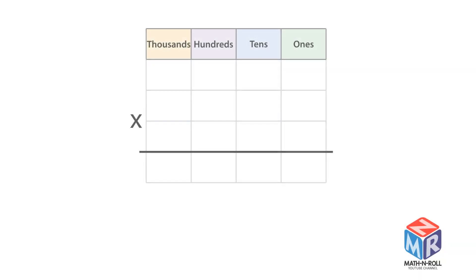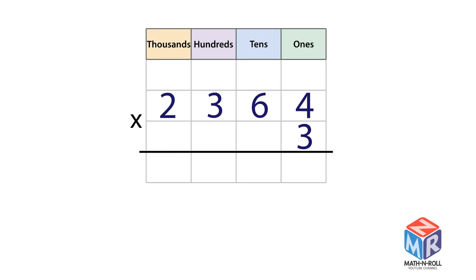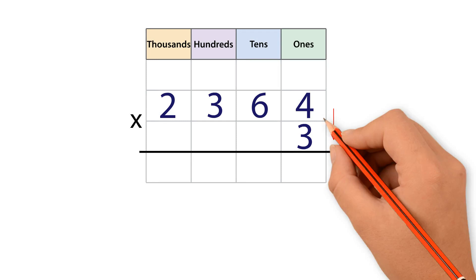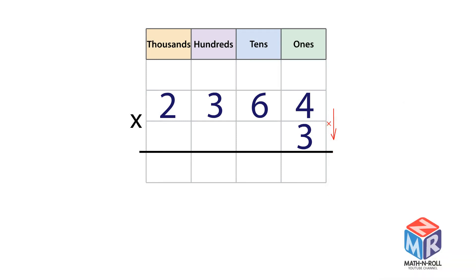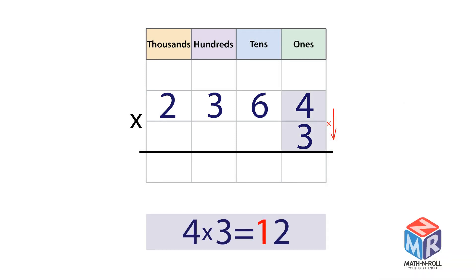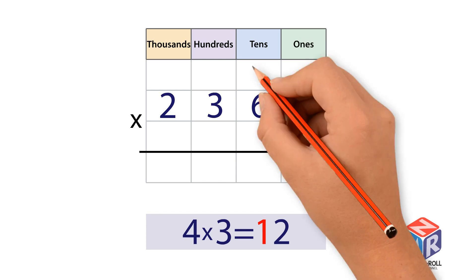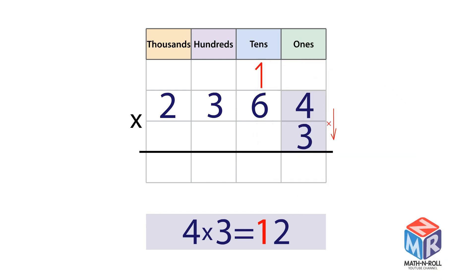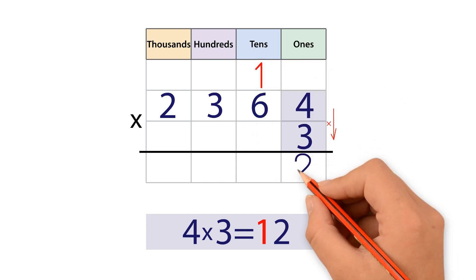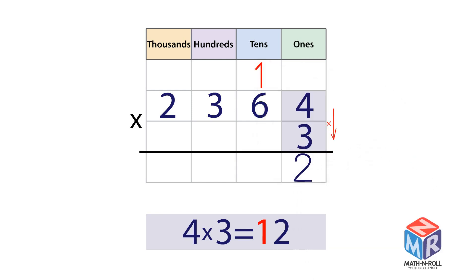Let's try another example: 2,364 × 3. Multiply the 1s. 4 × 3 ones equals 12 ones. Regroup 12 ones as 1 ten and 2 ones.